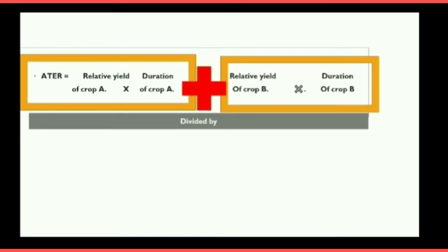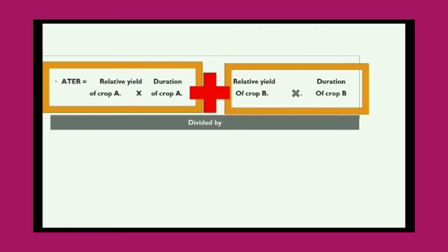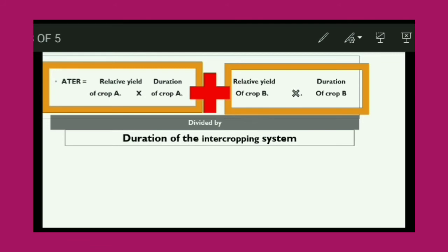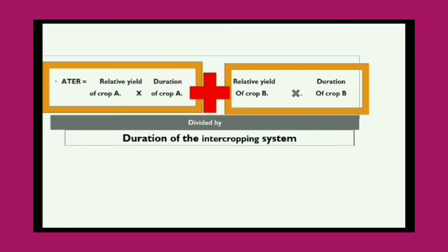The duration can be estimated according to the variety — it may be an early maturing, late maturing, or medium maturity variety. The most important thing is to multiply each crop's relative yield by its duration, and then divide by the total duration of the intercropping system. The total duration of the intercropping system signifies the complete number of days taken by the system. The duration of crop A and crop B — the total number of days taken by each crop to grow — must also be recorded.